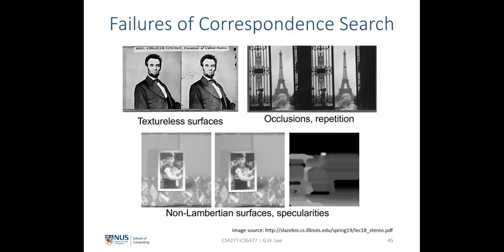There are also possible failure modes for correspondence search. For textureless surfaces, patches along a uniform region (e.g., a plain wall) look identical, so the matching cost is the same across the entire scanline, making it impossible to differentiate the best match. Another problem is repetitive patterns and occlusion — a patch may match multiple locations equally well, resulting in multiple similar cost peaks that are indistinguishable.